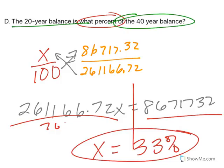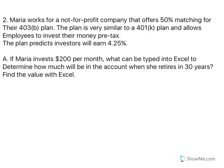Roughly 33% is like one third. So the 20-year balance is one third of the 40-year balance — it actually triples. In the first 20 years you earn an amount, and you actually earn triple that amount if you leave it in for just 20 more years. It's growing a lot quicker because of compounding — interest on top of interest. The longer you can keep it in, the better it's going to be.